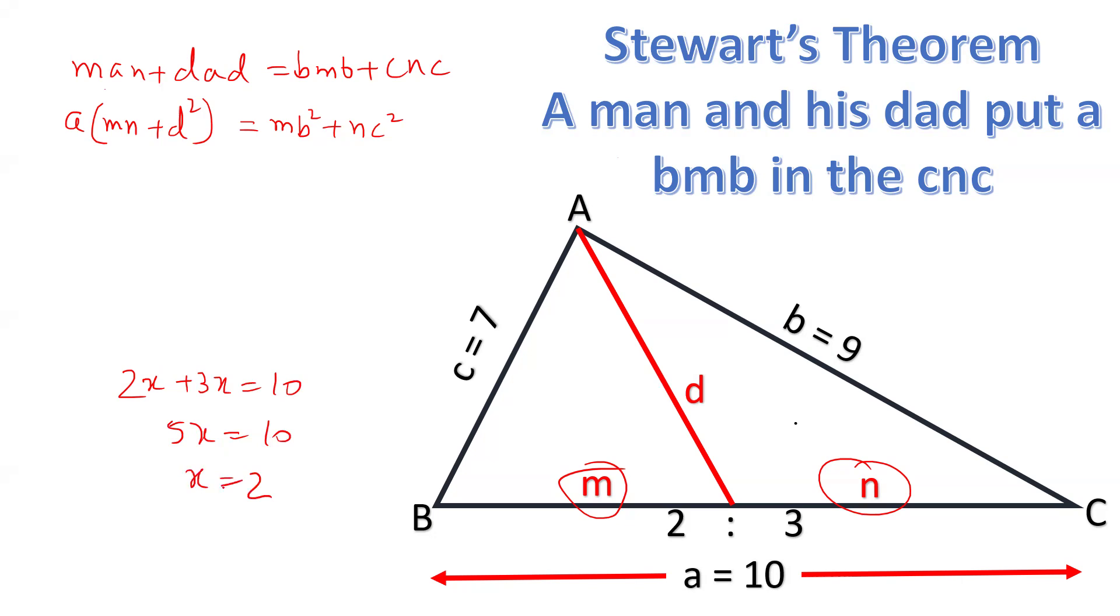So the value of M will be 2 into 2, this M becomes 2 into 2, that is 4. And value of N becomes 2 into 3, 3 into 2, which is 6. We have considered this value as 2x and 3x and we have got the value as 4 and 6.